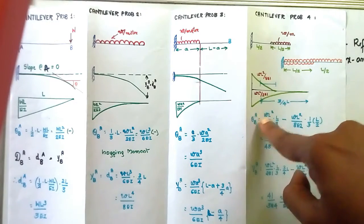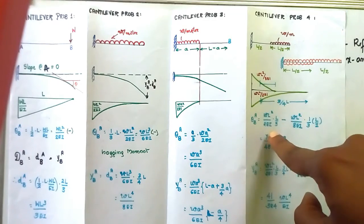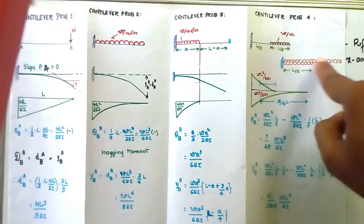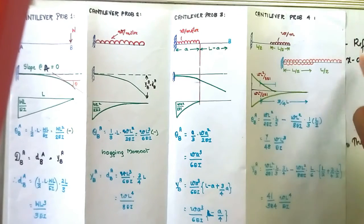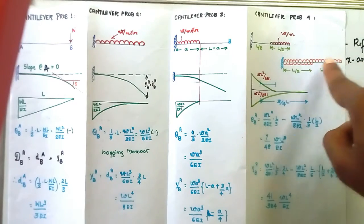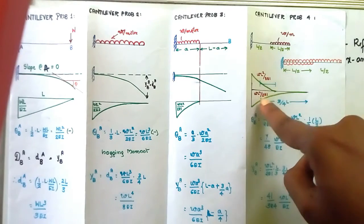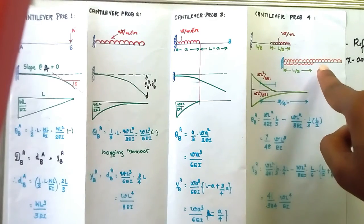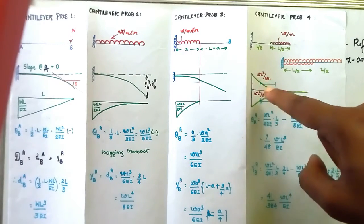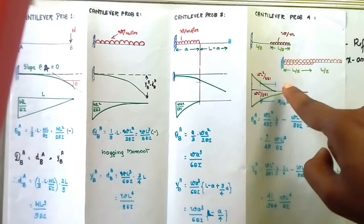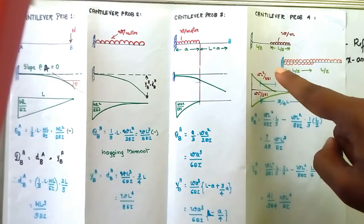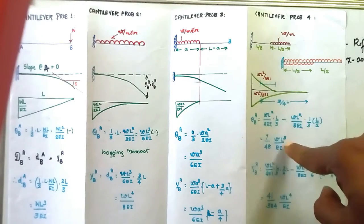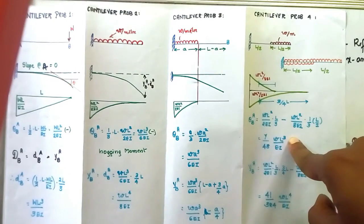The slope at B with respect to A is calculated by separating the moment diagram parts. The first loading creates a hogging moment, the second (upward UDL over first half) creates a sagging moment. So we take net hogging minus net sagging. The hogging area contribution gives WL squared by 2EI into L by 3, minus the sagging contribution WL squared by 8EI into one-third into L by 2. This gives 7 by 48 into WL cubed by EI as the slope — this is the area of the moment diagram between A and B.